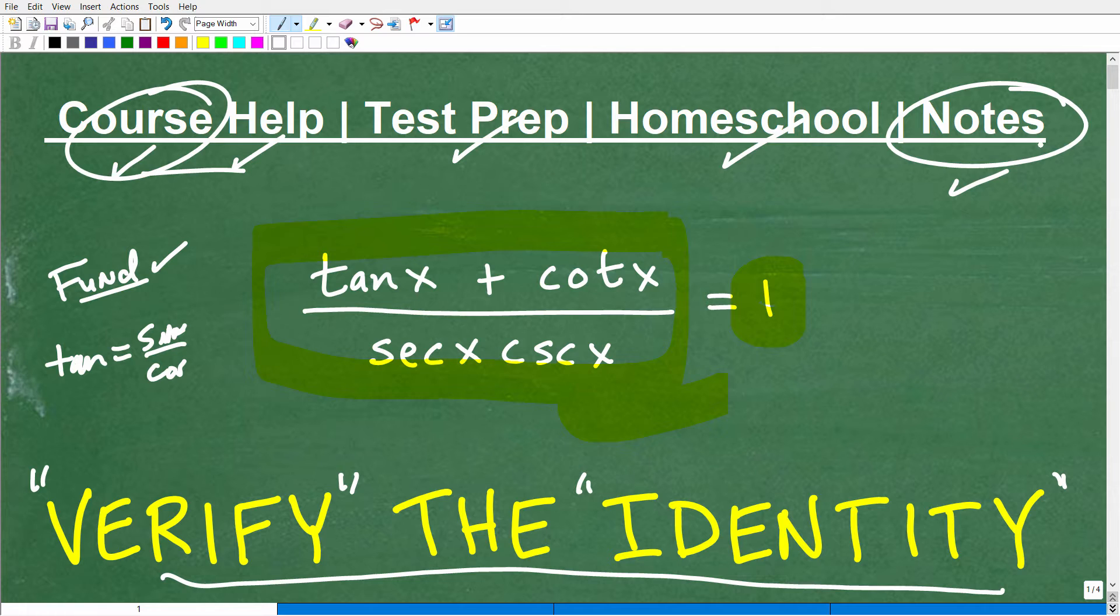Things like tangent is equal to sine over cosine, things like that. These are the fundamental identities, and there's quite a bit of fundamental identities. For this particular problem, all we're going to be using is the fundamental identities, but there's a lot of them. That's why you have to take great math notes and reference this stuff. Another one is sine squared plus cosine squared is equal to 1. That's an example of a fundamental trigonometric identity.